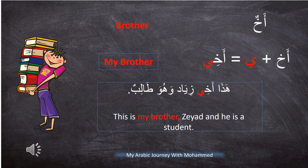أخ means 'brother.' With ياء المتكلم, أخ becomes أخي, meaning 'my brother.' For example: هذا أخي زياد وهو طالب — this is my brother Ziyad and he is a student. Because أخي is a masculine word, we use the demonstrative هذا.